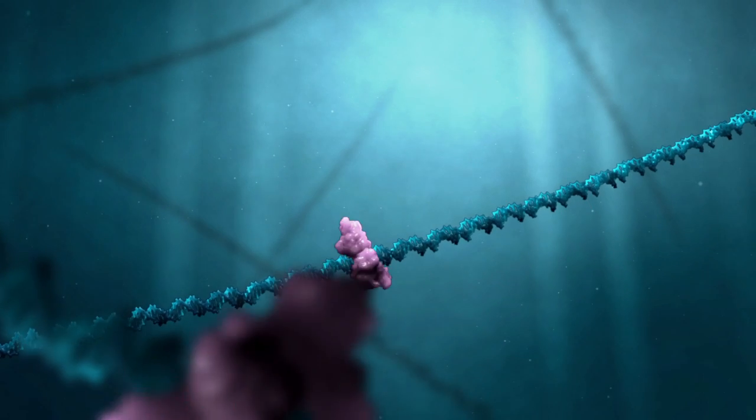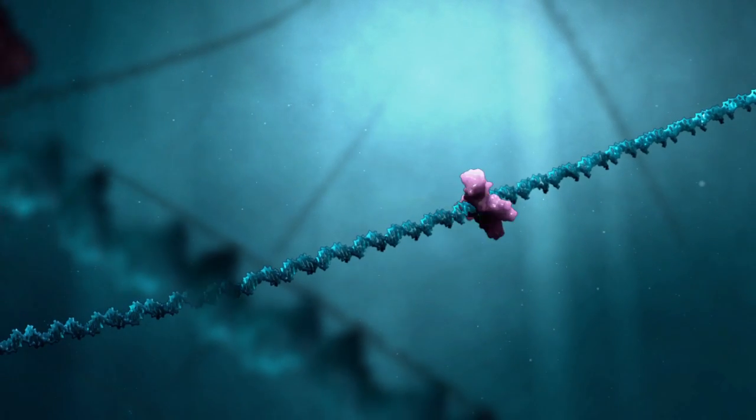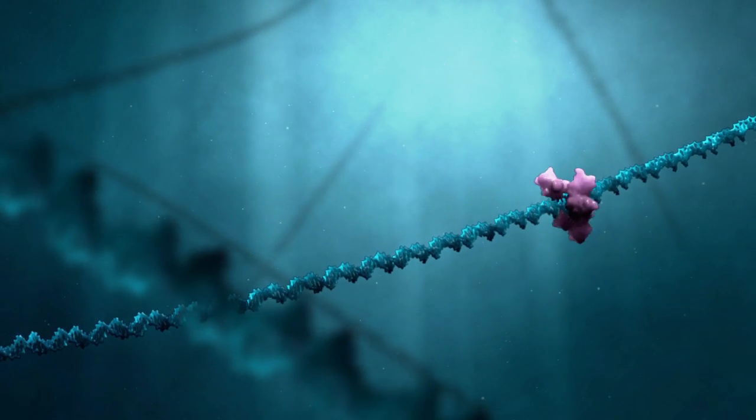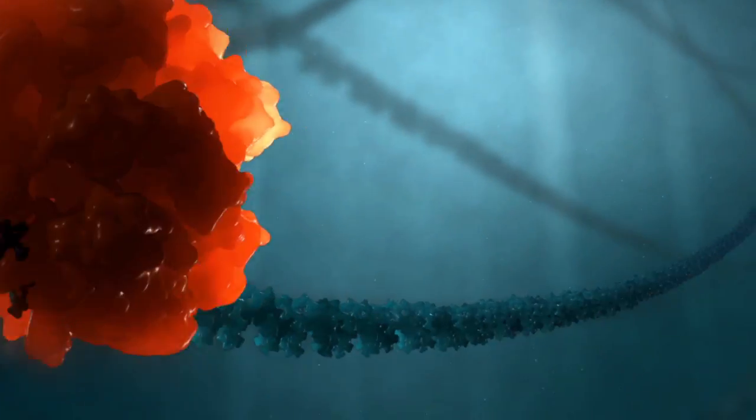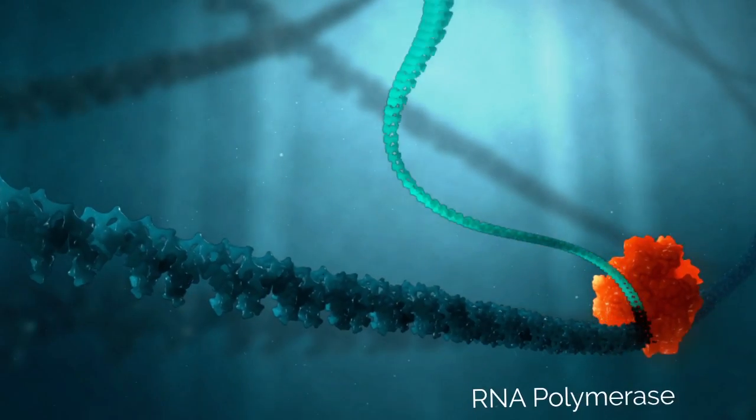Inside the nucleus, NF-KappaB seeks out its target genes to initiate transcription by RNA polymerase.